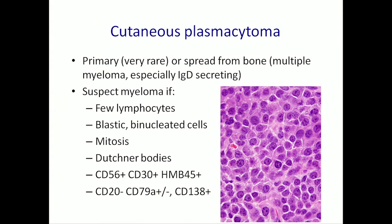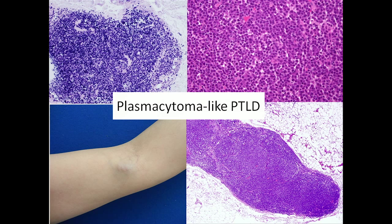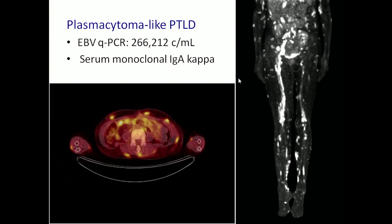Briefly on plasmacytomas: be aware that IgD-secreting plasmacytomas are more commonly presented in the skin. Those cases are purely plasma cells, with atypical and binucleated cells. You should never see mitoses on plasma cells. The presence of Dutcher bodies and markers like CD56 or HVA-45 are red flags that you may be dealing with cutaneous multiple myeloma. Another condition presenting with dermal plasma cell infiltrates is post-transplant lymphoproliferative disorder — strongly EBV-positive — typically deep, with a pure population of plasma cells, sometimes with minimal atypia but extensive involvement all over the body.